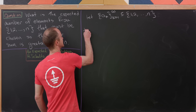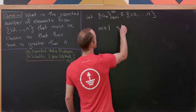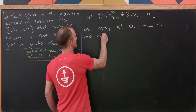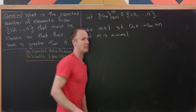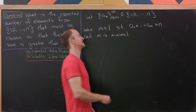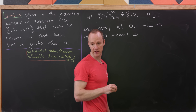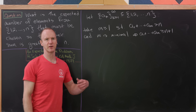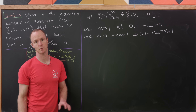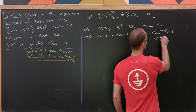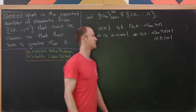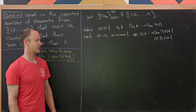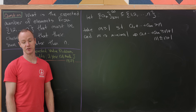Next, let m be an integer bigger than or equal to one such that a sub one plus all the way up to a sub m is strictly bigger than n, and m is minimal among all possible values. This tells us that a one plus up to a sub m must be bigger than or equal to n plus one — since we're working over natural numbers, strictly greater than n means at least n plus one. We also know that m is less than or equal to n plus one, because if our sequence contains all ones, we'll need n plus one of them to exceed n.